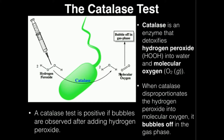The catalase test is one of the most important tests in differentiating between the staphylococci, which are catalase producers, and streptococci, which do not produce catalase. We can use this to distinguish between staphylococcus and streptococcus.